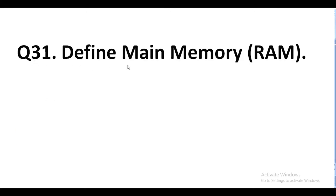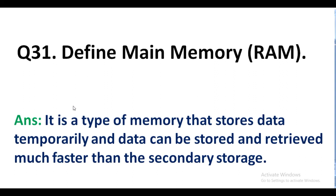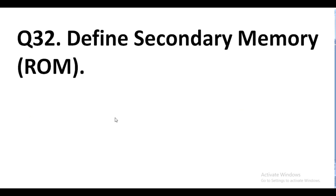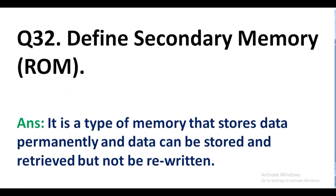Question number 31. Define RAM (Random Access Memory). Answer. It is a type of memory that stores data temporarily and the data can be stored and retrieved much faster than secondary storage. Question number 32. Define secondary memory. Answer. It is a type of memory that stores data permanently and the data can be stored and retrieved but not rewritten.